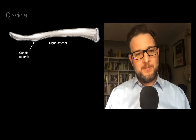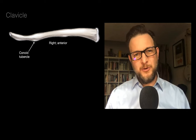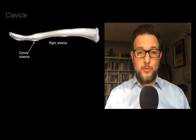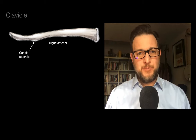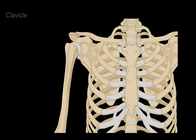If we look at this right clavicle blown up in an anterior view, on the bottom lateral third there's something called the conoid tubercle. This little bony prominence is an attachment for the conoid ligament, which is part of the coracoclavicular ligament.